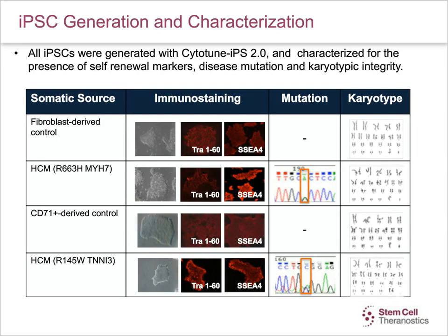This slide shows the characterization of newly derived iPSC cell lines. For each cell line, we characterize based on morphology and presence of self-renewal markers such as TRA-1-60 and SSEA-4. We also use intracellular markers such as NANOG and OCT4. Based on the project, we either check for the presence of ecto-, meso-, and endoderm markers to establish pluripotency, or test the ability of iPSCs to differentiate into cardiomyocytes. We also confirm the presence of a normal karyotype and confirm specific mutations in diseased cell lines by sequencing. We then create master banks and working cell banks for all iPSC cell lines.